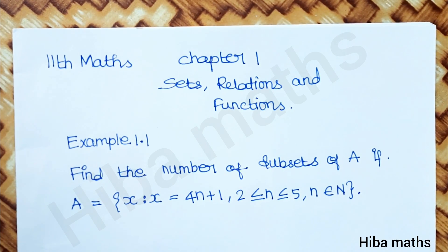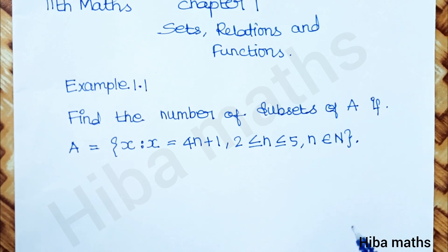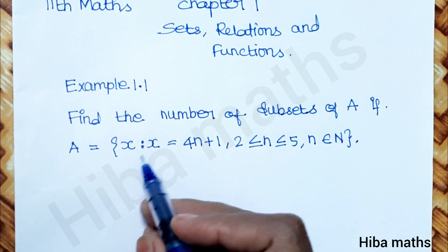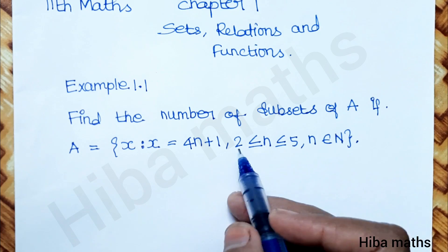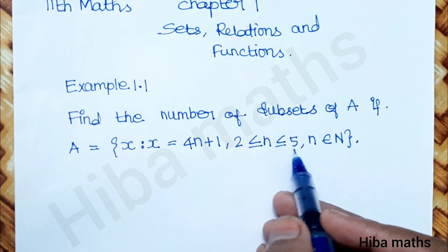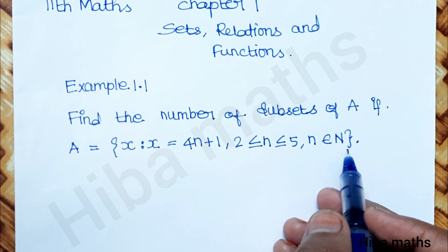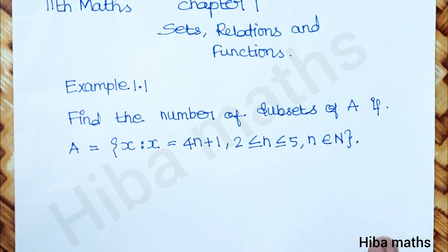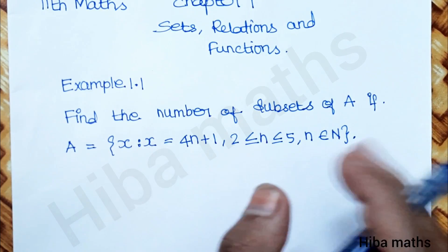Hello students, welcome to Hibamax 11th standard Math, Chapter 1: Sets, Relations and Functions, Example 1.1. Find the number of subsets of A, if A = {x | x = 4n + 1, n ≥ 2 and n ≤ 5, where n is an element of natural numbers}. This question would have been seen in 10th standard. We will substitute n in the function.